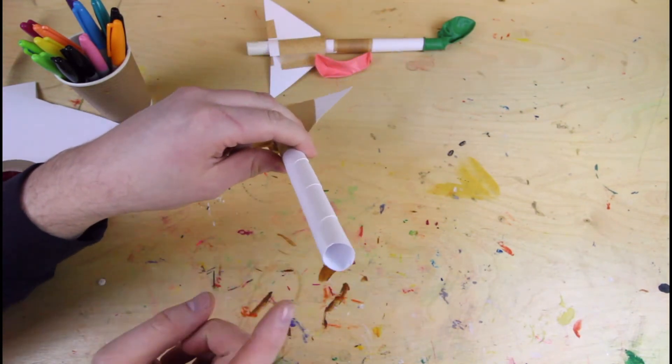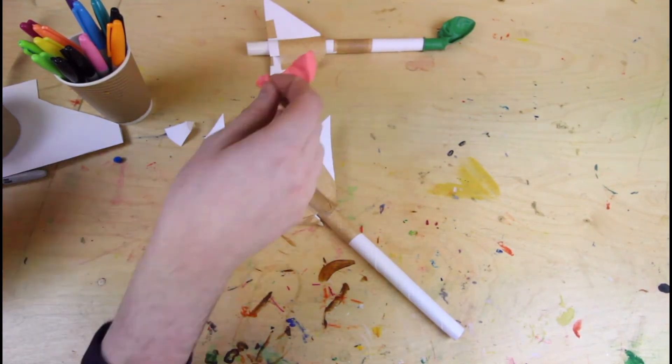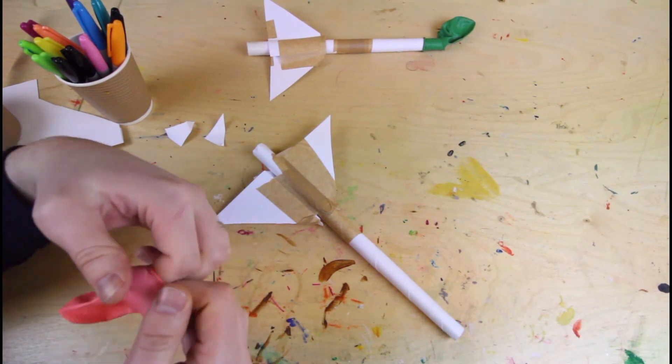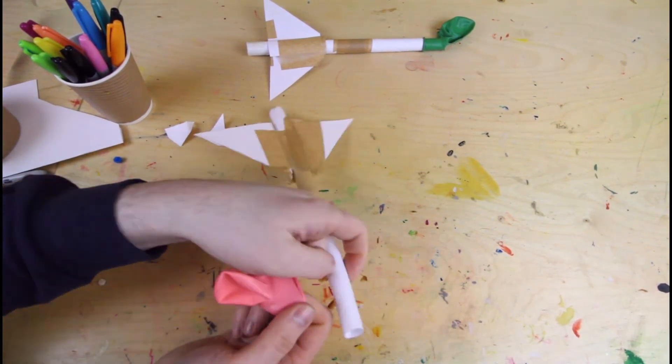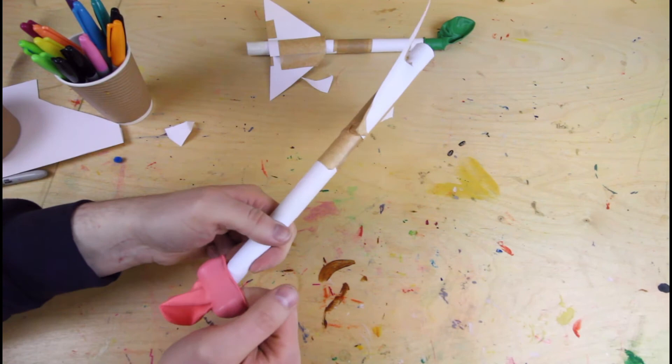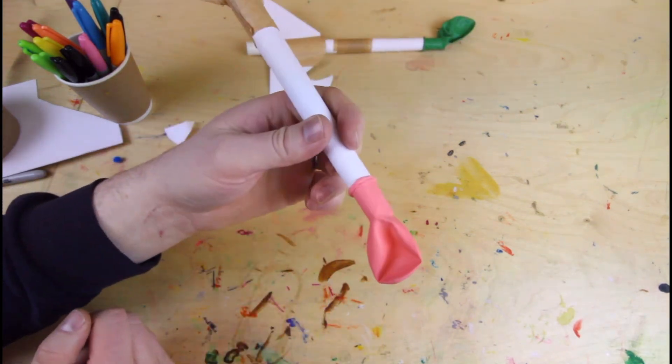The next step is just to put the balloon on the end. So get your balloon, stretch it a little bit. And then you can just pop that on the end. Like so.